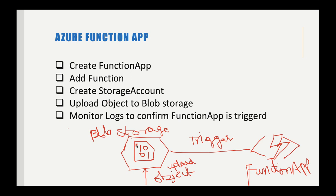Another advantage of the Function App is that it provides on-demand compute. Whenever there is more traffic or load, based on the number of files, resources will be automatically provisioned and those files will be processed. Multiple Function App instances will be created and resources will be upgraded. It is horizontally scalable, and whenever the load reduces it will automatically drop off those resources and reduce the number of instances.